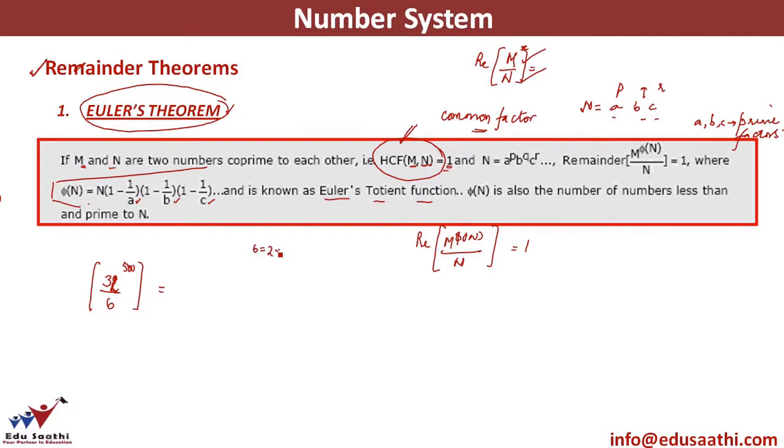So if I look at 6, 6 is 2 into 3. What is the value of Euler function? It will be 6 times 1 minus 1 by 2 and 1 minus 1 by 3. So this will give me 6 into 1 by 2 into 2 by 3. So if I just solve it out it gives me an answer of 2.